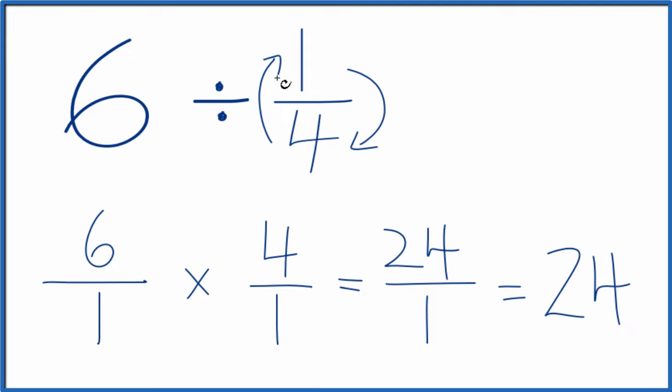So six divided by one-fourth, that equals 24. If you multiply 24 times one-fourth, you'll get six. This is Dr. B dividing six by one-fourth. Thanks for watchin'.